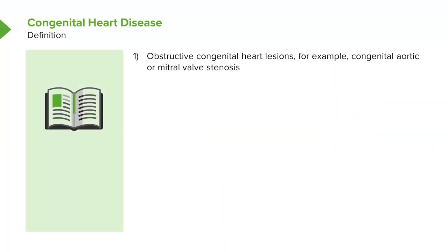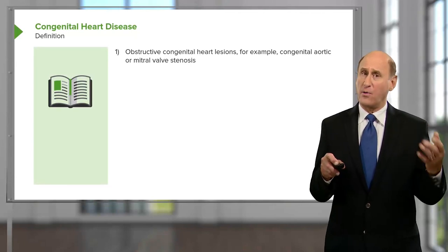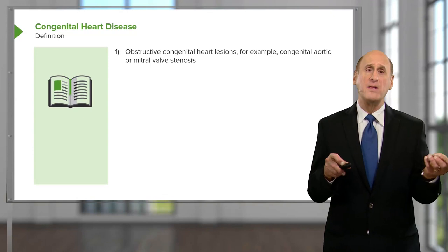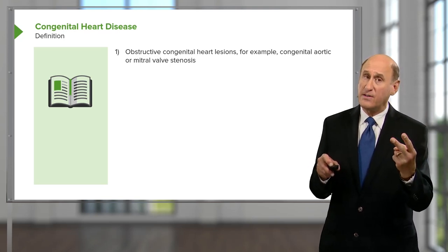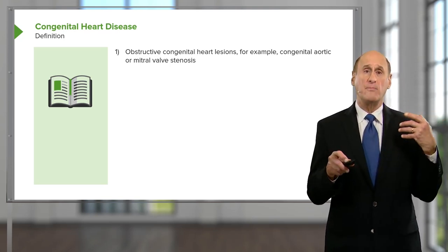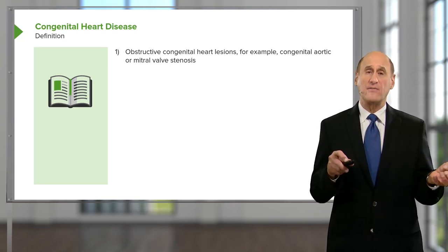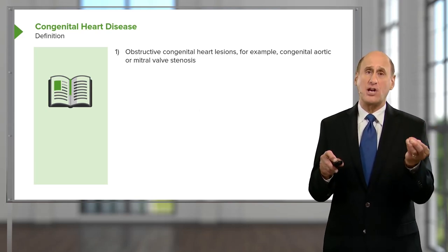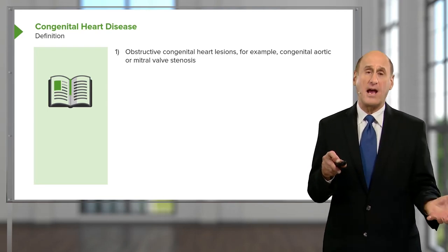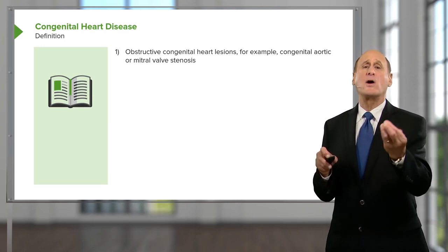There is a group — those with cyanotic congenital heart disease — that continue to have problems. One form of congenital heart disease is the obstructive form. For example, the bicuspid aortic valve can become stuck, so that instead of having a three-leaflet aortic valve, you only have a two-leaflet valve, which can become stenotic in midlife. There can also be pulmonic valve stenosis, where the pulmonic valve is misshapen, putting an extra workload on the right ventricle. Those are obstructive lesions.